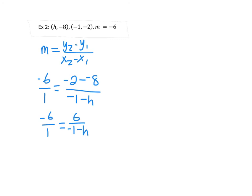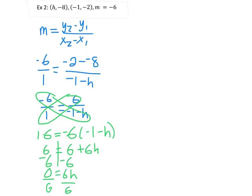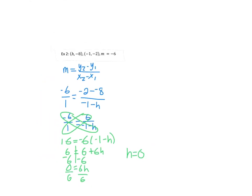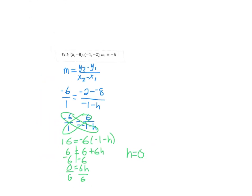Let's say we didn't see that. Let's solve this like a proportion because we can always do that. So I multiply 1 times 6 on one side and negative 6 times negative 1 minus h on the other, and then I solve. And by doing this, I also get h equals 0. That means that the slope between the points 0, negative 8, and negative 1, negative 2 gives us a slope of negative 6.